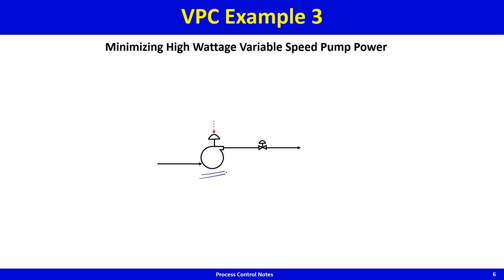The pump speed is set by the operator. The goal is to deliver the demanded flow; a flow controller manipulates the valve to deliver that flow. Now imagine the valve position is only 20% open for a particular flow demand with high variability.